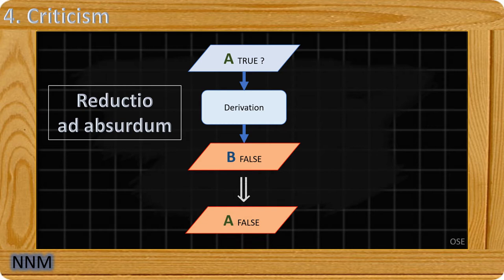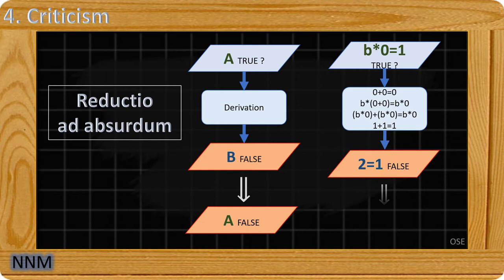For example, I assume that b times zero equals one. Then I arrive at the result, two equals one. So my assumption that b times zero equals one is false.